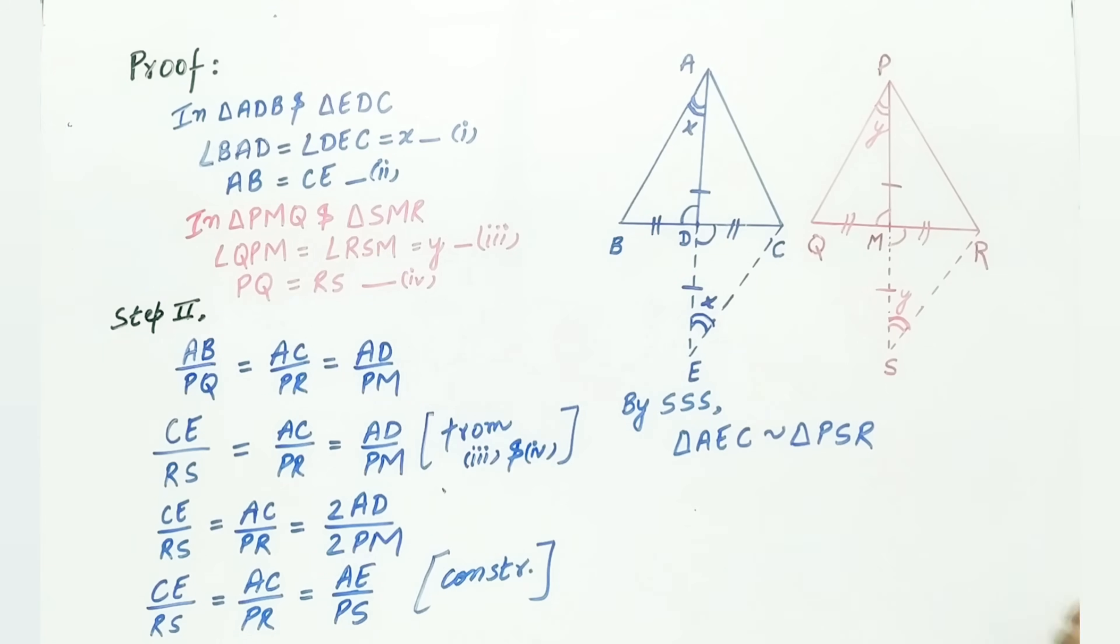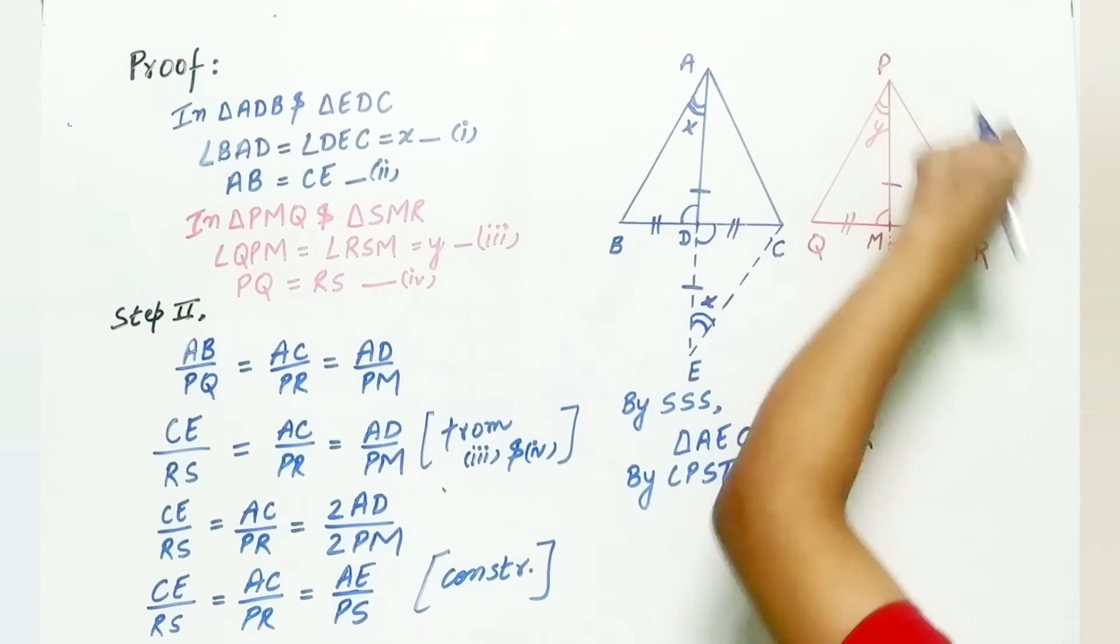And now, by CPST, that is corresponding part of similar triangles, angle DAC is equal to angle MPR, which is Z.